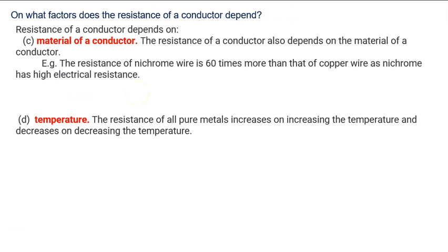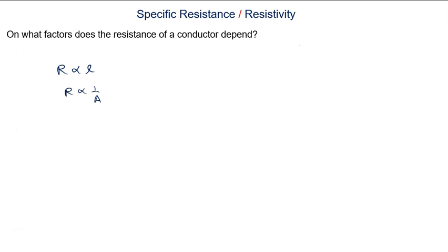The resistance of a conductor also depends on the material. For example, the resistance of nichrome wire is 60 times more than that of copper wire, as nichrome has high electrical resistance. The resistance of a pure metal increases on increasing the temperature and decreases on decreasing the temperature. This gives us equation one and equation two.